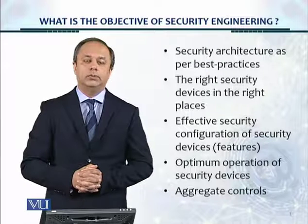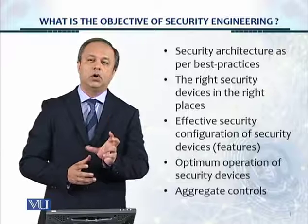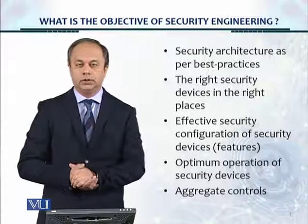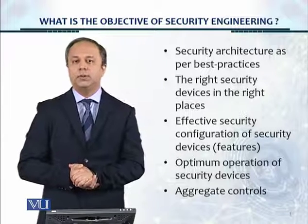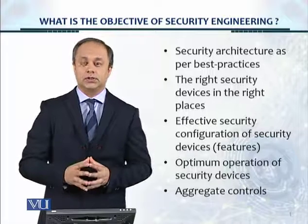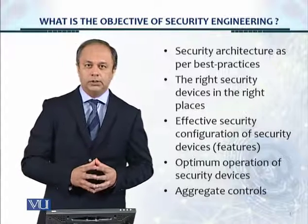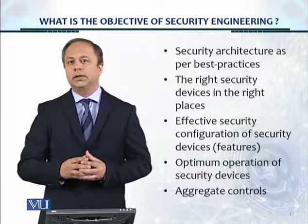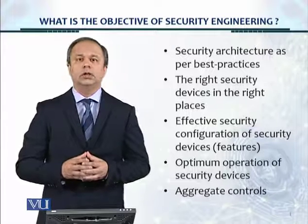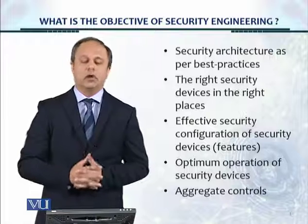For example, the firewall needs to be placed at the perimeter of the network, and a firewall also needs to be placed at the mouth of the data center, as we have discussed. If we place a firewall or any particular device in the wrong location, the controls will not be effective.